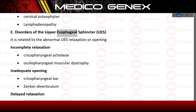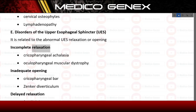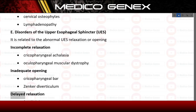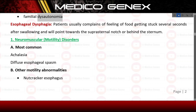E) Disorders of the upper esophageal sphincter (UES) related to abnormal UES relaxation or opening — including incomplete relaxation such as cricopharyngeal achalasia and oculopharyngeal muscular dystrophy; inadequate opening such as cricopharyngeal bar and Zenker's diverticulum; and delayed relaxation such as familial dysautonomia.